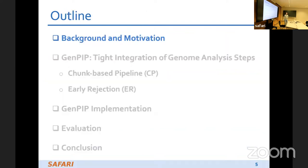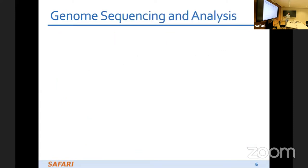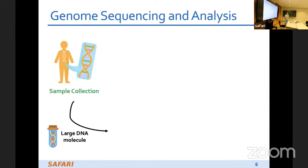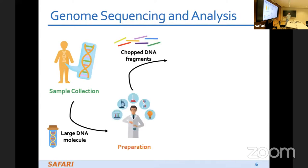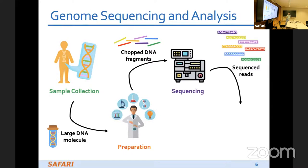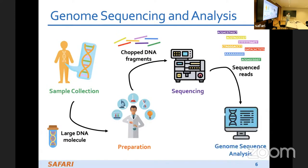Here is our outline for today's talk. First I will go through the background and motivation, giving an overview of the genome sequencing and analysis steps. First we get some samples, then we do preparation and get the DNA fragments. The fragments go to the sequencing machine and we get sequence reads. Finally, we do the genome analysis.